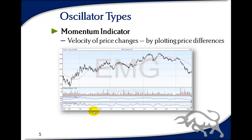Back to the momentum indicator: as prices go upward, the momentum indicator will be above the middle line — in this case shown as 100 — meaning the price is higher than it was 20 or five days ago. If the momentum indicator is rising, prices are going up and accelerating. If it turns horizontal, prices can still be rising but only at the same rate as 20 or five days ago. When the momentum indicator starts to come down, prices could still be rising but you're seeing a slowdown in the trend — in advance of the price slowdown.